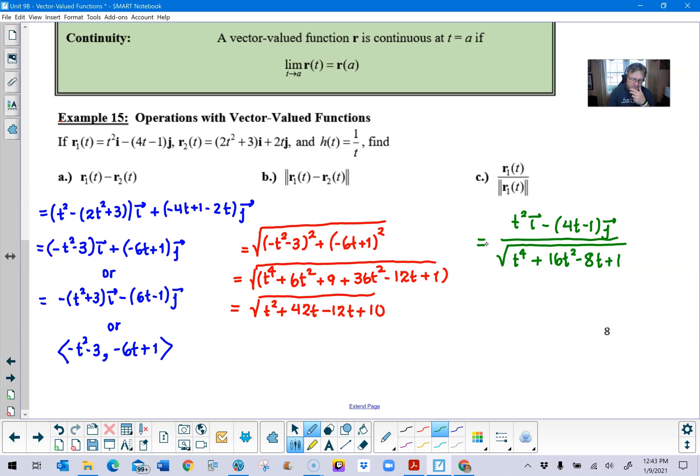Now what I think would be somewhat interesting here is for you to think about what does this equal for a given value of t. In other words, if you were to plug in, let's say, let's let t equal 1. Well, we would have 1 squared times i, which is i, minus, and then we would have 1 plugged into here, which is 4 minus 1, which is 3. And then the denominator would be the square root of 1 plus 16 minus 8 plus 1. Well, that would be 17 minus 8, 9 plus 1, which is 10.